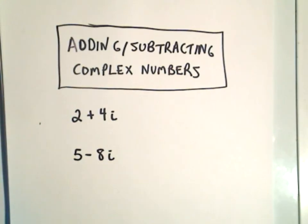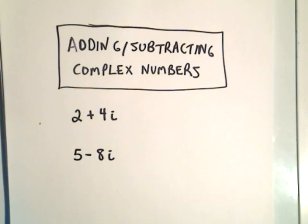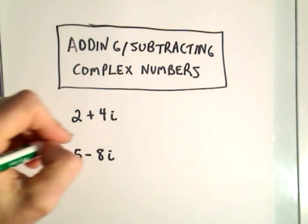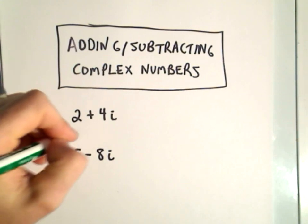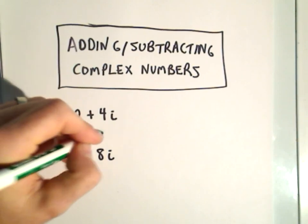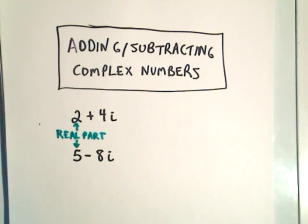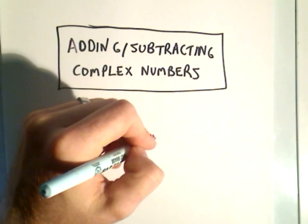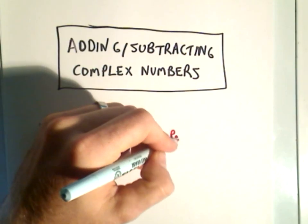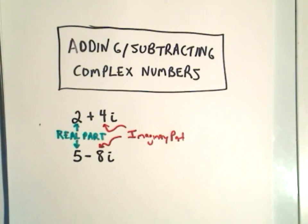Technically all numbers are complex numbers, but we want to have this i tacked on there. The beginning part we call the real part, so the real part would be 2 and the real part would be 5. The imaginary part is the other part — the 4i and the negative 8i.